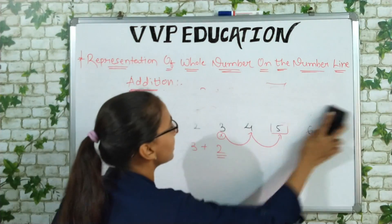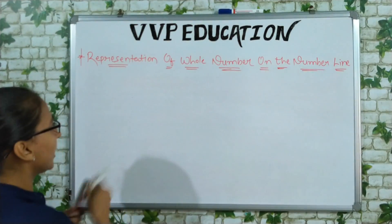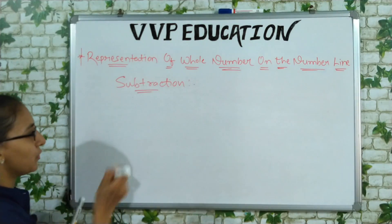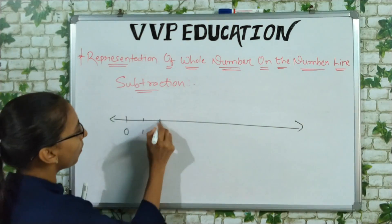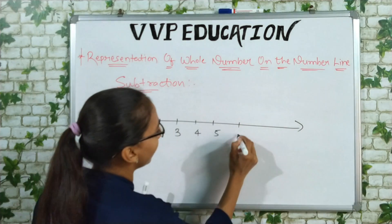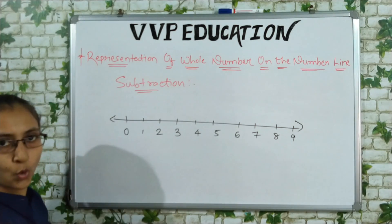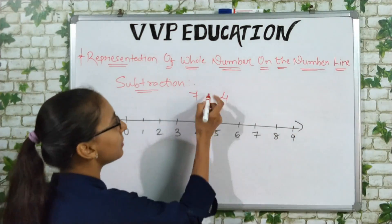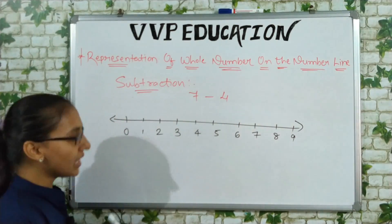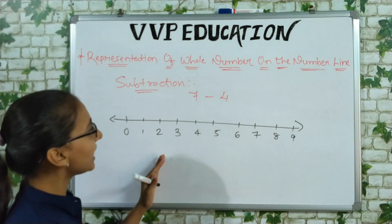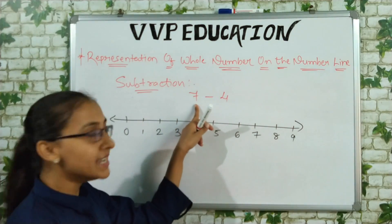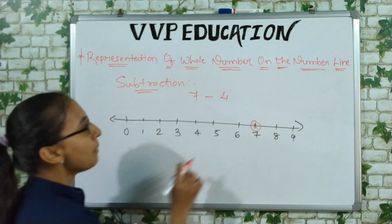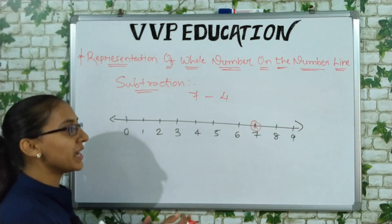Now let's do subtraction on the number line. I draw a number line with numbers 0 to 9. Suppose I have 7 minus 4. For subtraction, the starting point is the first number, which is 7. Then I change direction — instead of moving right as in addition, I move to the left side.